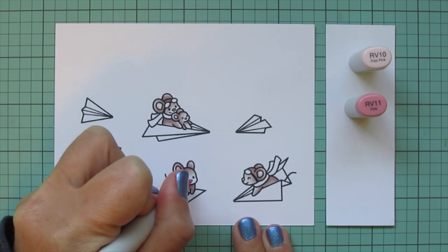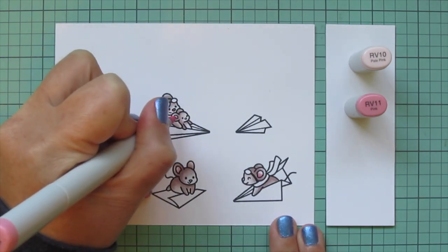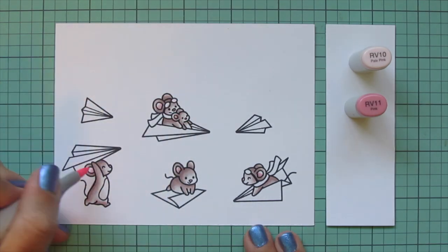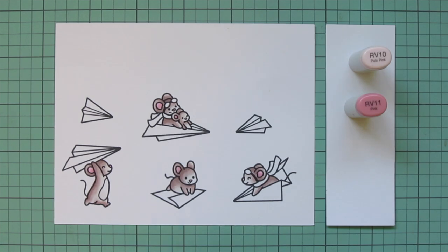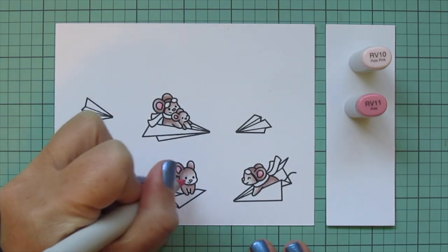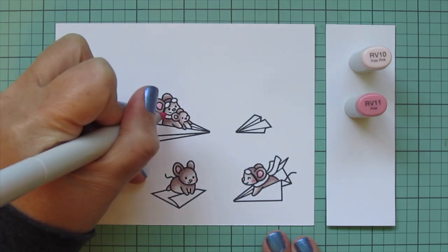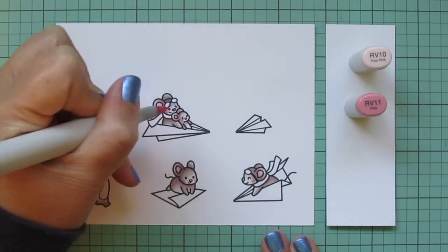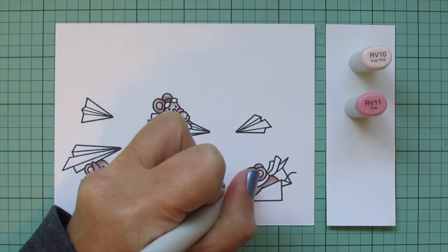I'm going to color in all of the noses and the ears using RV10 and RV11, just the RV11 for the noses. And then I did give everybody some rosy cheeks with both of those shades. I just used the RV11 first and then blended out the edge with the RV10 just to make them look extra cheerful.